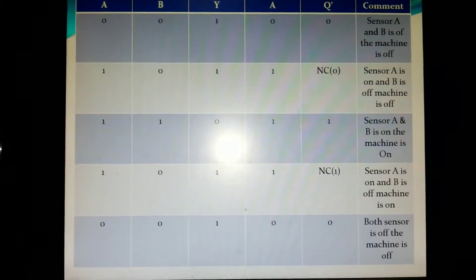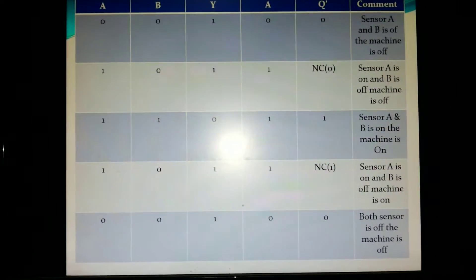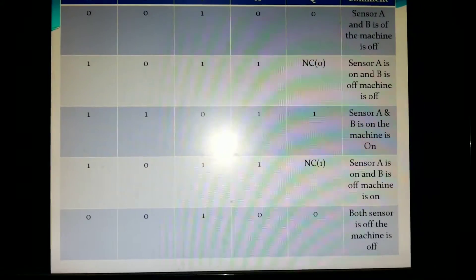When the input is 1, 1 and Y gives us 0 and A gives us 1, Q bar gives us 1, which means sensor A and B are on and the machine is also on.